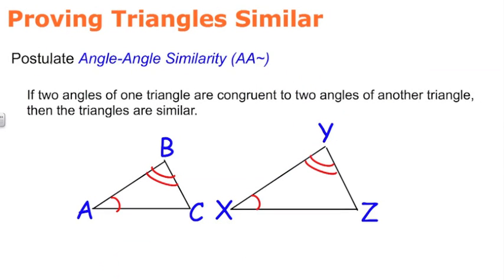Here we have a postulate and it's the angle-angle similarity postulate designated by capital A, capital A and the similar symbol. If two angles of one triangle are congruent to two angles of another triangle, then the triangles are similar.